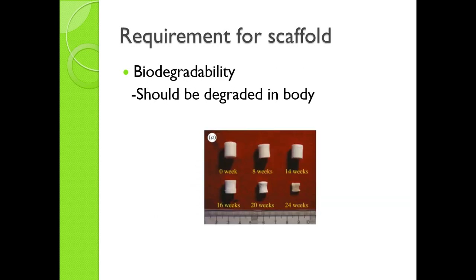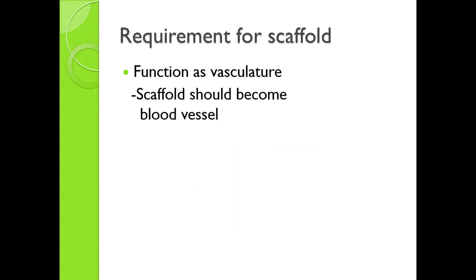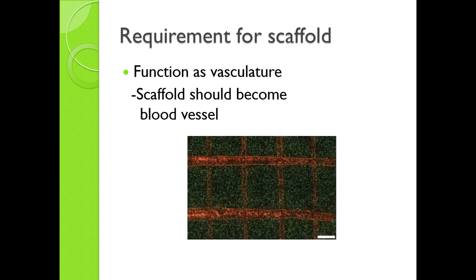You can easily understand the degradability of scaffold in this picture — it becomes gradually smaller as time goes on. The next requirement is that it must function as a vasculature, meaning a blood vessel network. Because in this method, one tissue is formed by one type of cell, we can't make a complex structure. It means we can't make blood vessels, because it is a complex structure. So the scaffold should function as a blood vessel network. These pictures show tissue that has scaffold vasculature — the red part is the blood vessel made by scaffold.